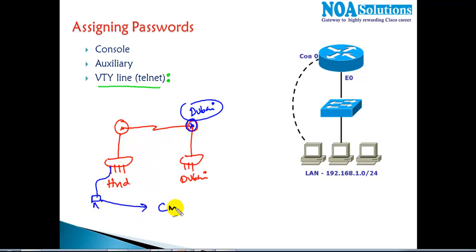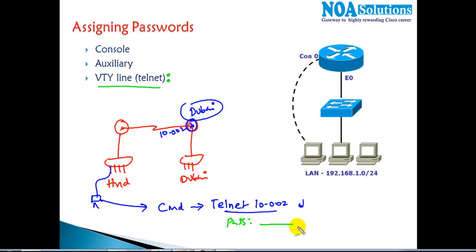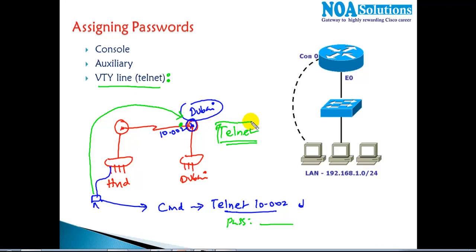By sitting here, I can go to the command line and use the Telnet command with the IP address — for example, 10.0.0.2. Once I give this command, it will ask for a password. If I provide the correct password, the router will allow me to connect remotely to the command line of that router. We call this Telnet — it's similar to Remote Desktop Connection in Microsoft Windows. The line used for Telnet is called the VTY line, which is a virtual Telnet connection that allows you to connect remotely.